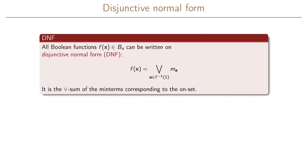This will lead us to the disjunctive normal form. A normal form of a function is a standardized way of writing the function uniquely in a specific form. The disjunctive normal form, abbreviated as DNF, is one such way. All boolean functions can be written in DNF, and this form is given by the OR sum of all our min terms.